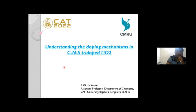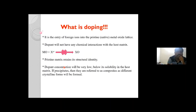The unique feature that you can observe in this system is that carbon, nitrogen, and sulfur are all non-metal in nature. Before exactly understanding the co-doping process, we will define what we mean by the doping process.